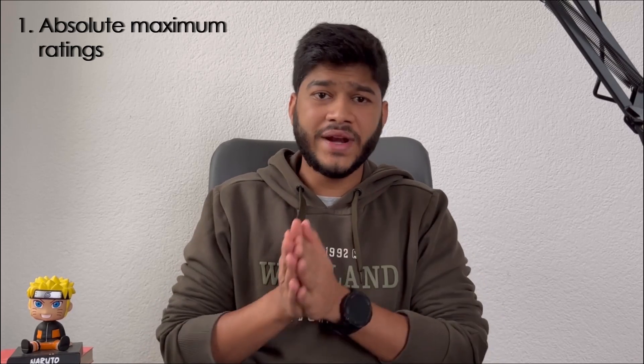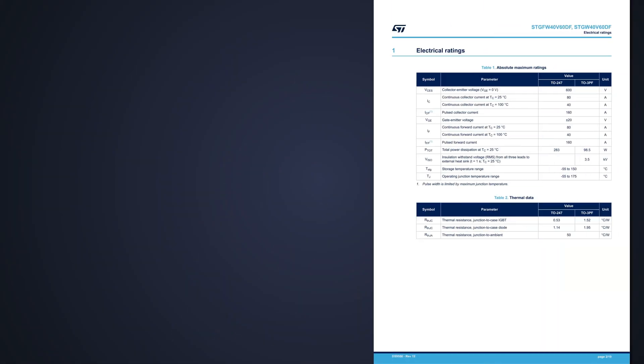We'll divide its parameters in three different categories: absolute maximum ratings, static characteristics, and dynamic characteristics. Let's start with the absolute maximum rating. These parameters are usually specified at 25 degrees Celsius ambient temperature, unless any conditions are mentioned.